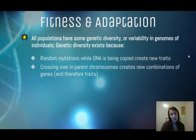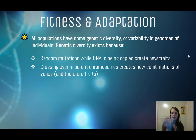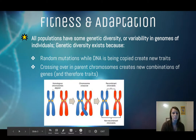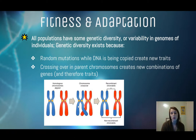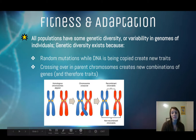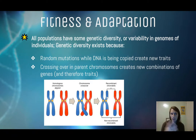Another thing that occurs is crossing over. This occurs in meiosis and is when parent chromosomes create new combinations of genes, and therefore new combinations of genes are going to produce new traits. If we look at these chromosomes — one came from one parent, the red one came from another — crossing over occurs where the chromosomes swap some genetic information, so by the end you have two different chromosomes because the genes got swapped around, and the offspring will have new traits different from their parents.